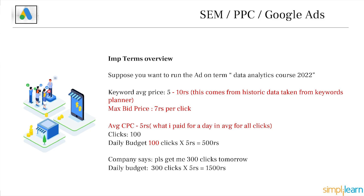Maximum bid price is what you submit to Google — the maximum you're willing to pay per click for a keyword. Average CPC is what you actually pay on average per click during a period. For example, if I got 100 clicks at 5 rupees each, my daily budget spent is 500 rupees. If tomorrow the company needs 300 clicks, I use yesterday's average CPC data — 5 rupees per click — and submit a daily budget of 1,500 rupees to expect 300 clicks.